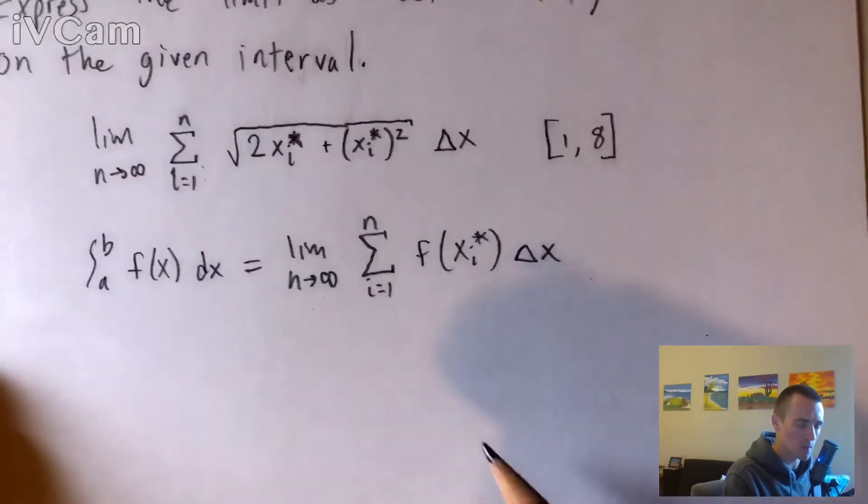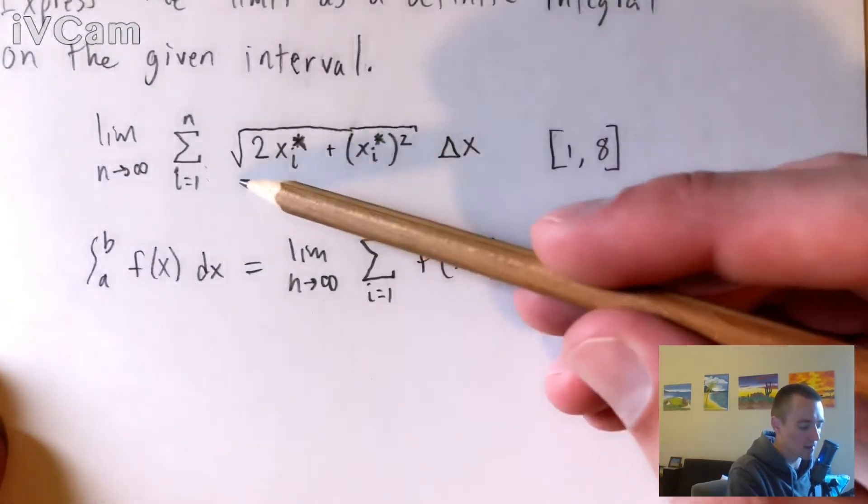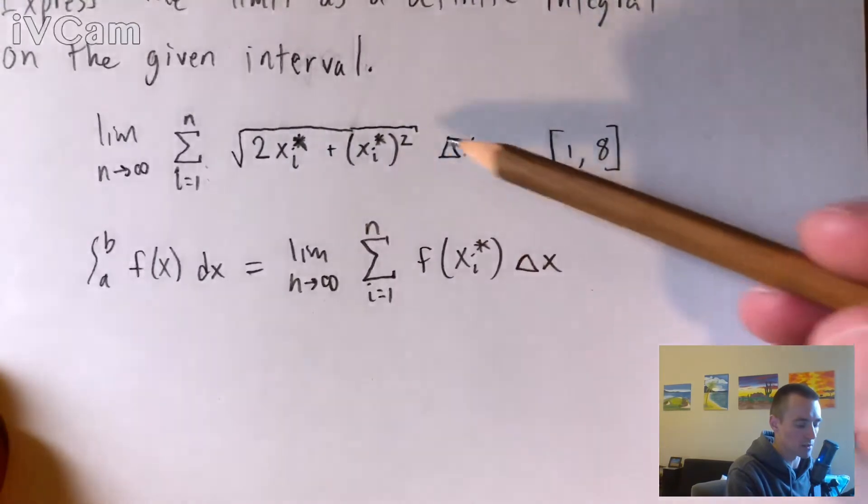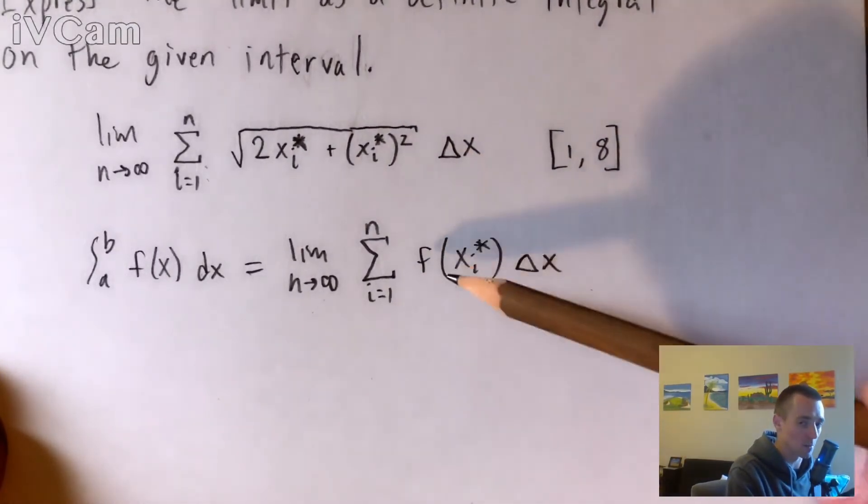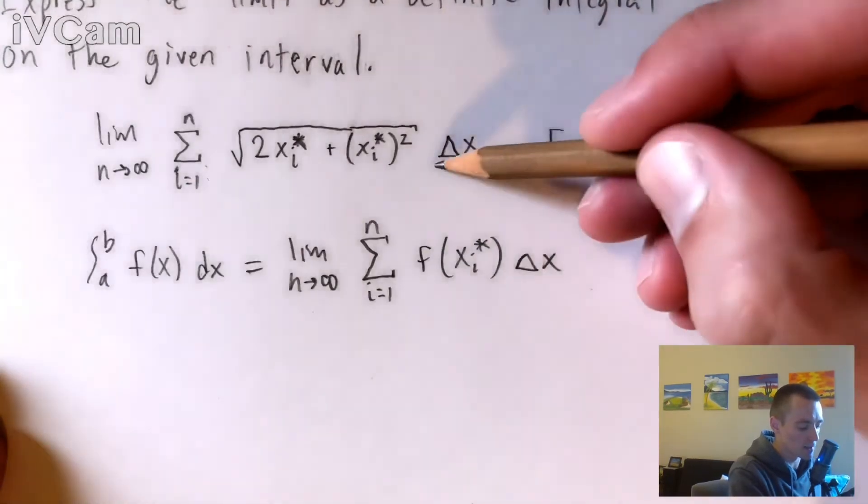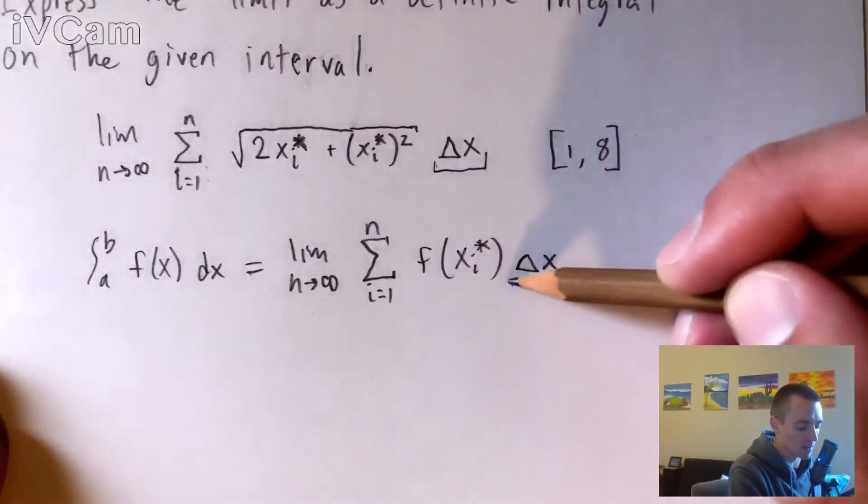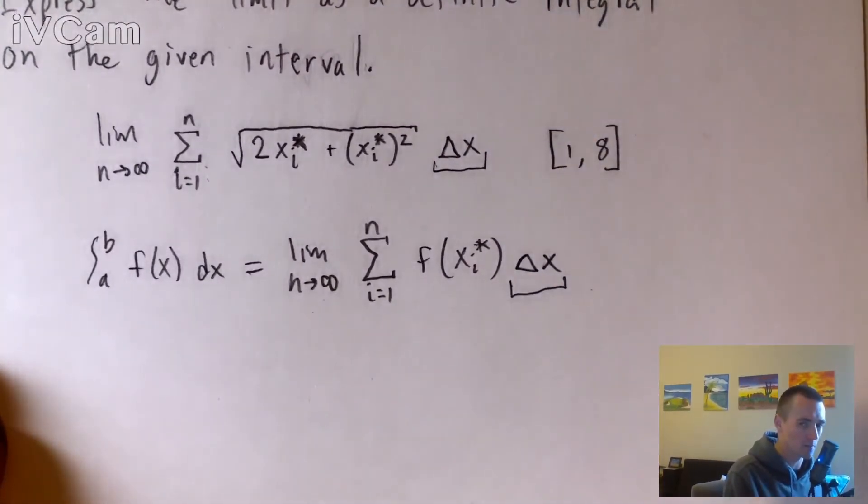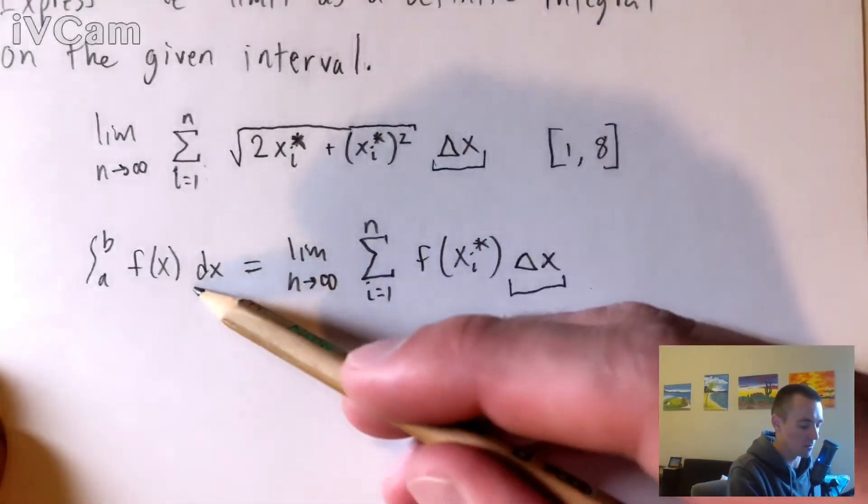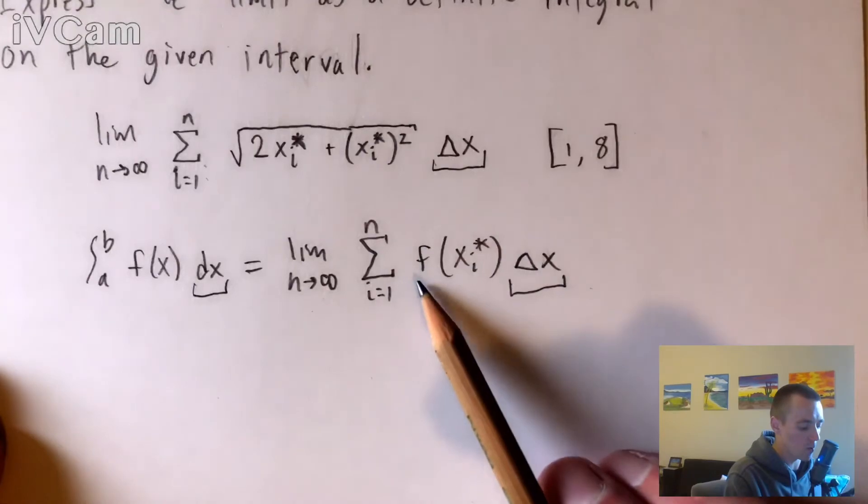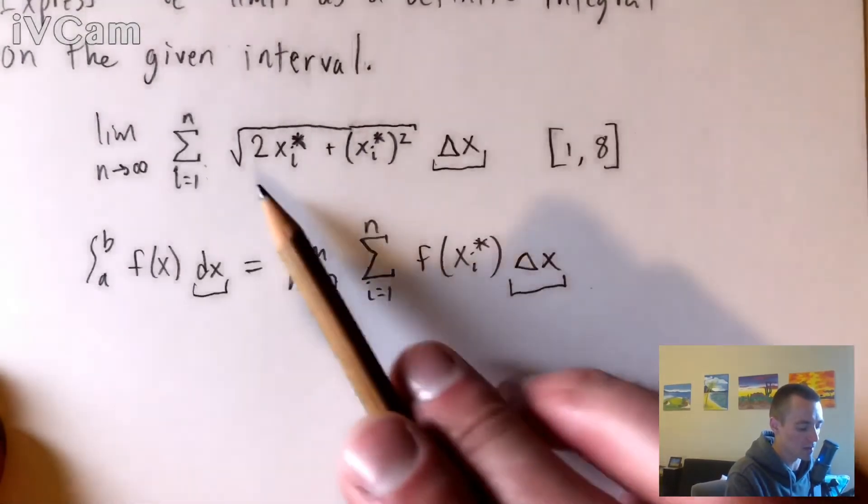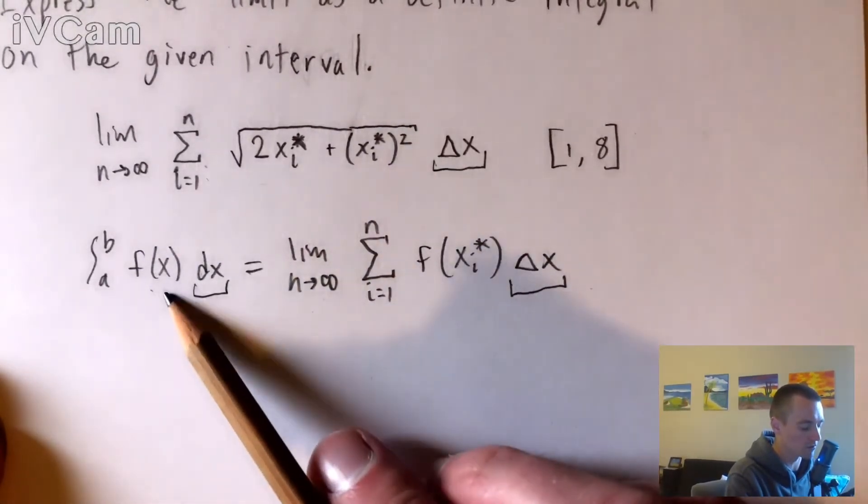So really what we need to do is figure out how this stuff that we're taking the limit and the sum of matches up with the stuff that we're taking the limit and the sum of down here. So we can see pretty clearly that this delta x is going to correspond with this delta x here. So that is going to correspond with our dx over here in our integral. So basically what we need to do is figure out how our function within here is going to match up with some other f of x function.